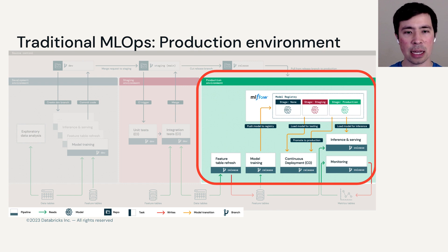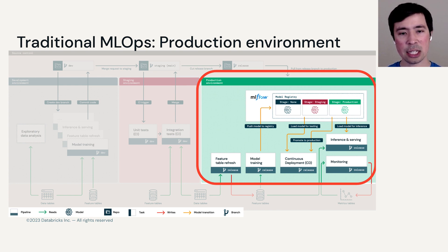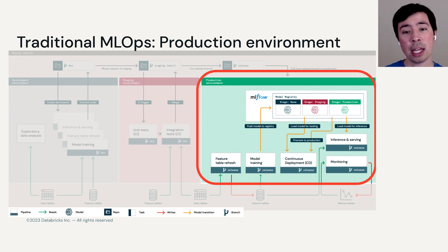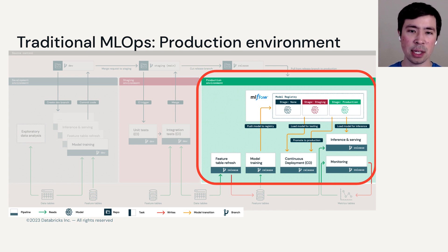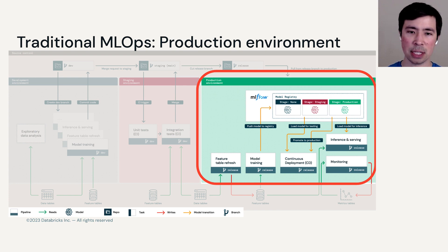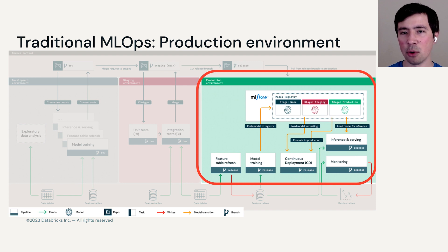Once tests have passed, that code can move towards production. Here we've zoomed in a bit, showing all those pipelines which were developed in dev, tested in staging, and are now instantiated in production. Going from the bottom left, we have data being read into a feature table refresh job, written out to a feature table in batch or streaming mode. That might feed into an automatic model retraining pipeline, maybe run once a week. When a new model is produced, it is put into the model registry at the top layer. Think of model registries like opinionated repositories for models — tracking different model versions as they move towards production readiness.